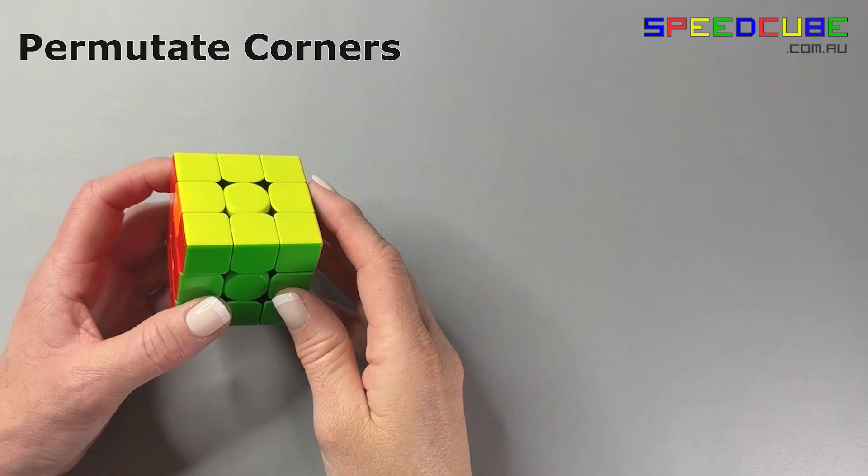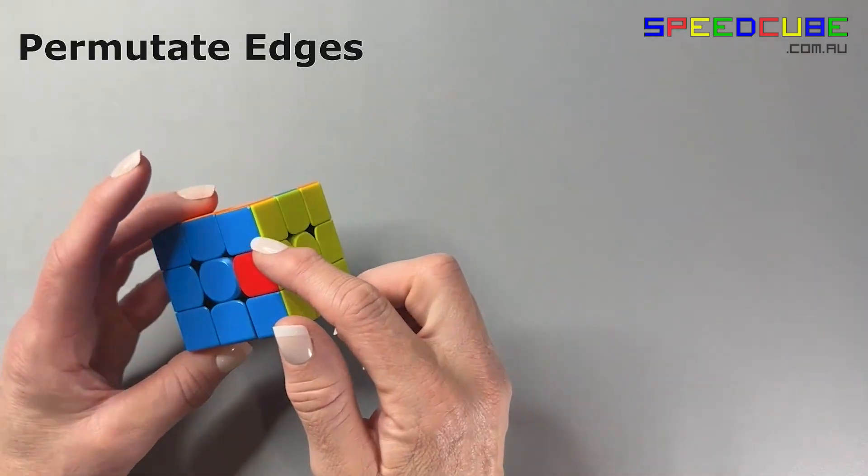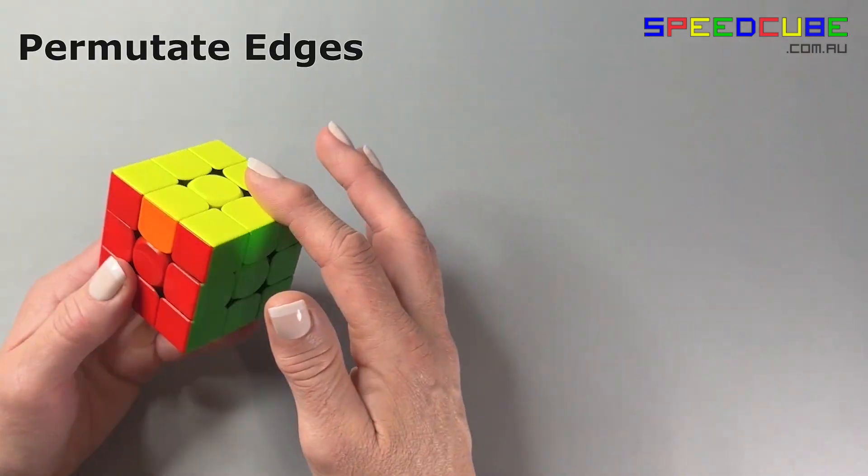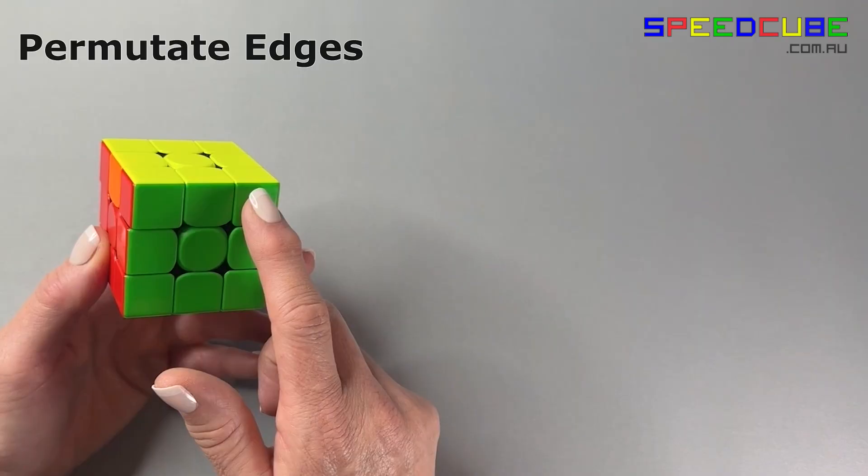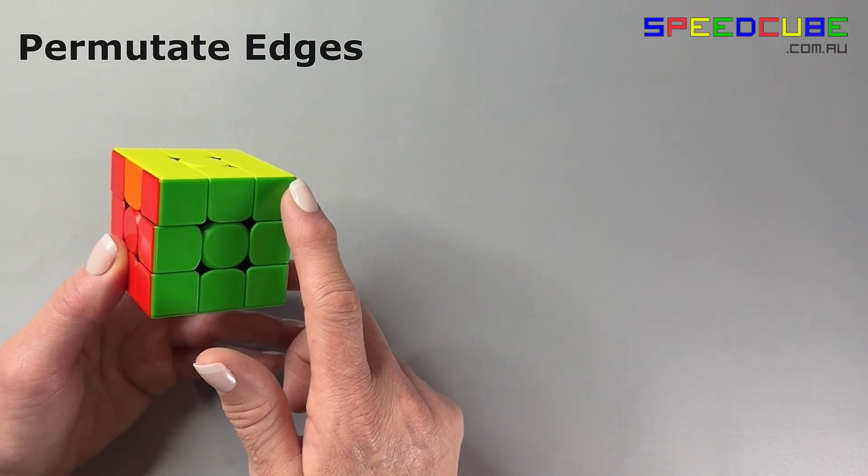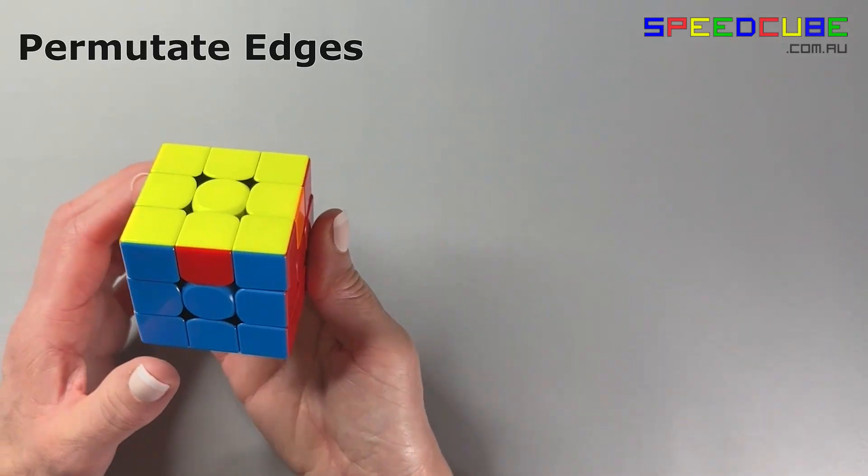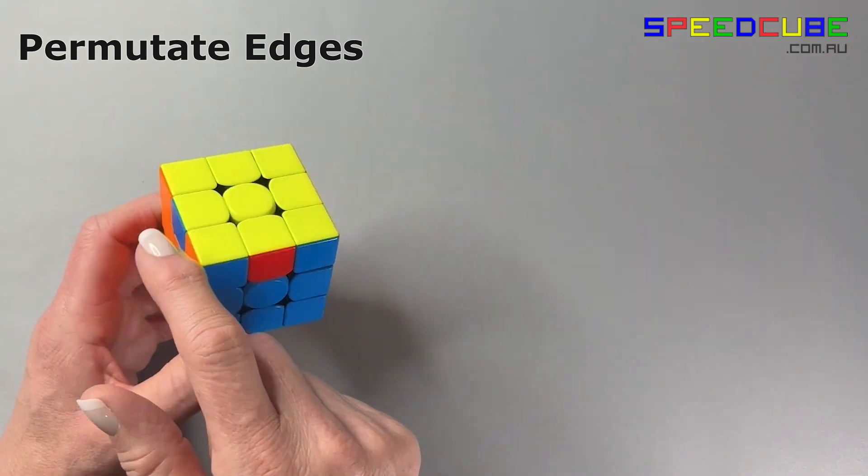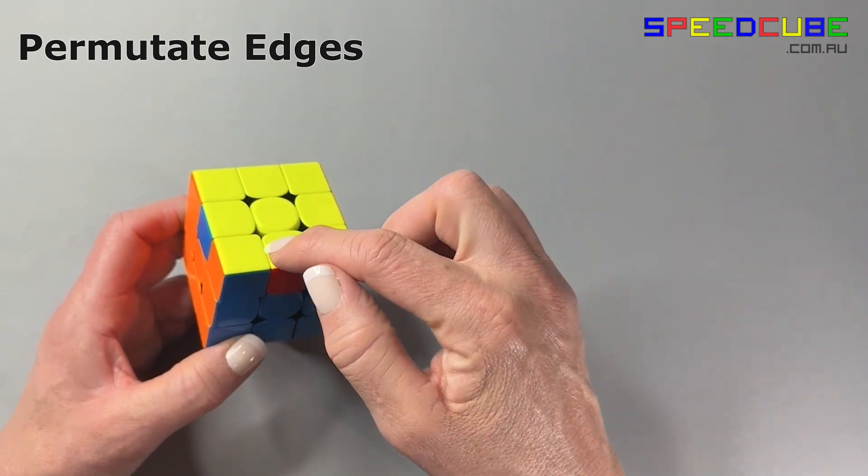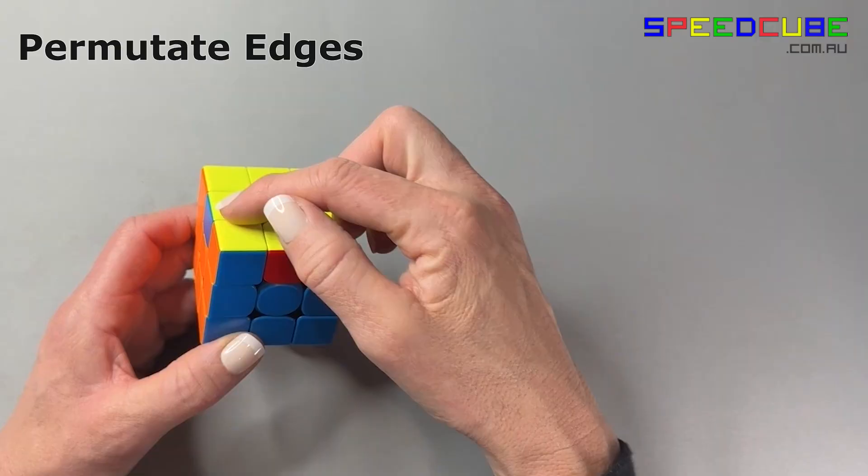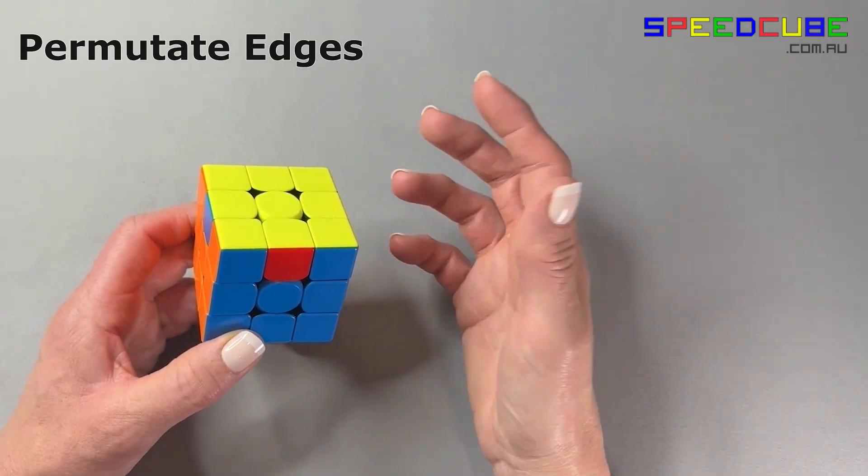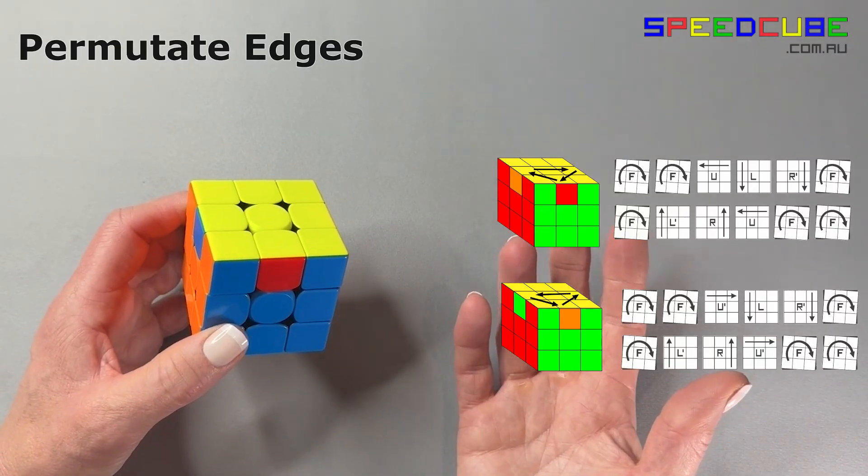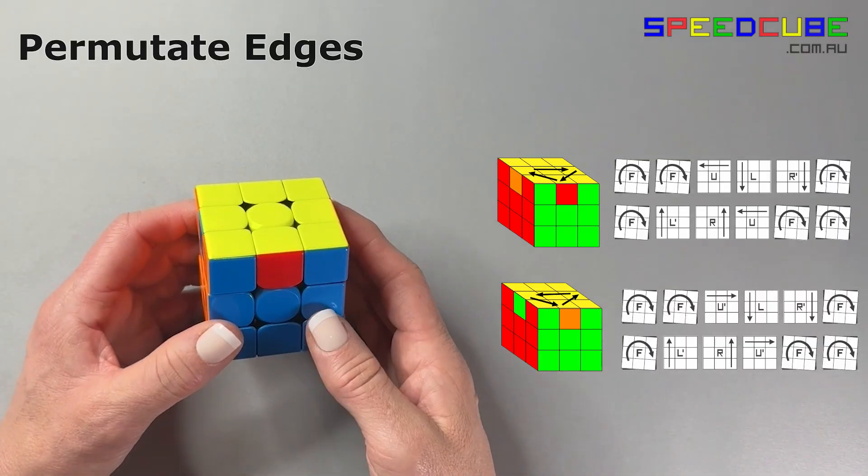Now that we've got all the corners in the correct position, we'll move the edges into place. Have a look around the cube. If you have this solid bar like this with three colors matching, then hold your cube with that solid bar at the back. Have a look at these three pieces. You're either going to move them clockwise or counter-clockwise. So follow the steps that match your situation to move the edges into place.